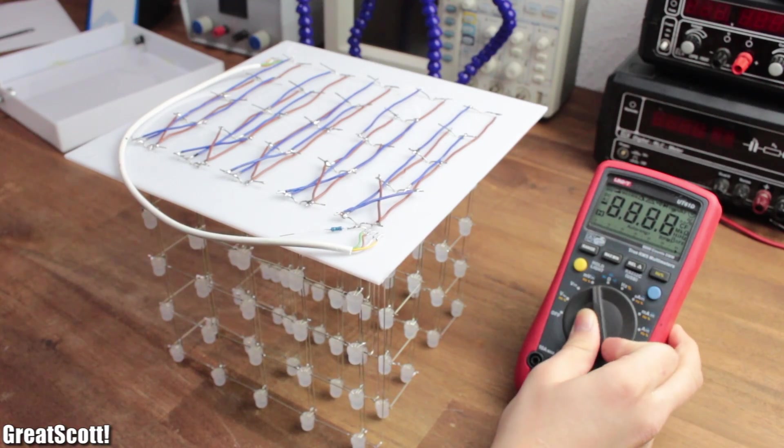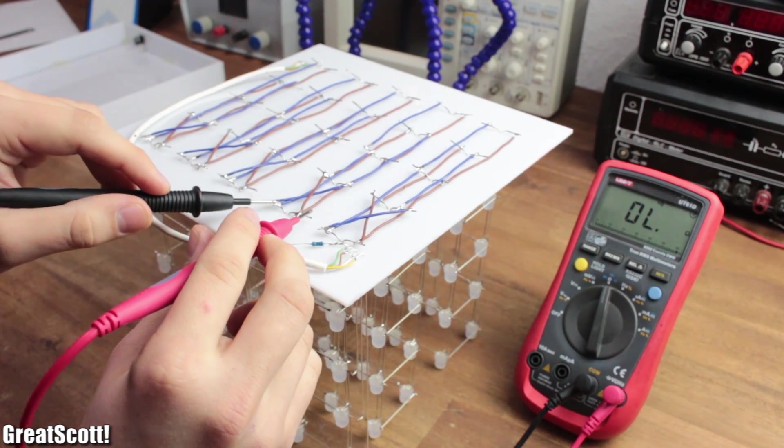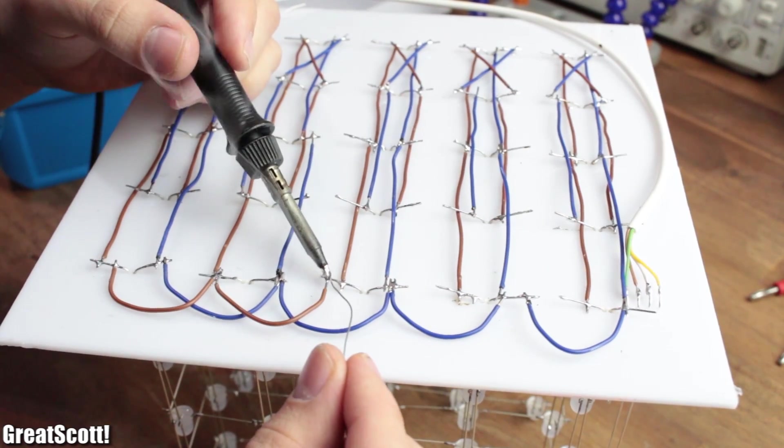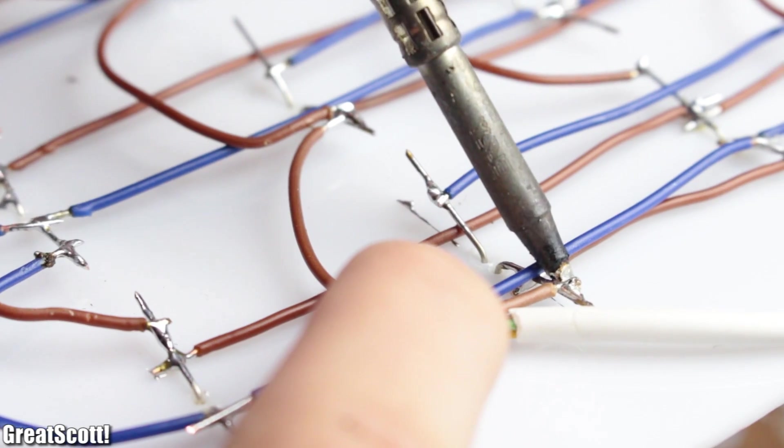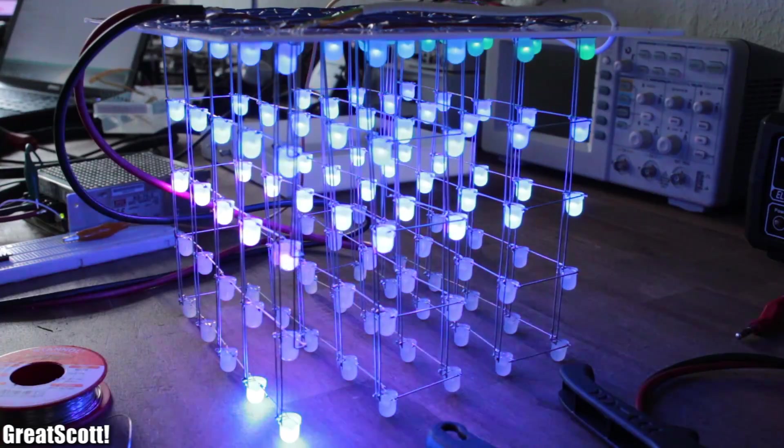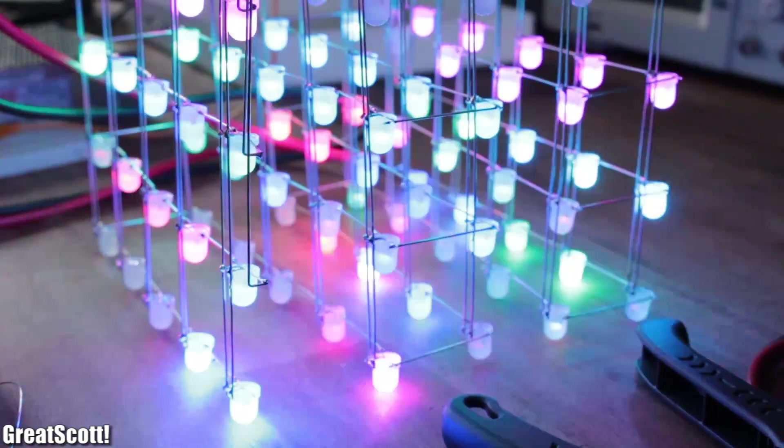Every now and then it is also a good idea to check for shorts with the continuity function of your multimeter. And most importantly, make sure that there's a horizontal and vertical connection line for your power wiring. If not, funky looking data corruption can be the consequence.